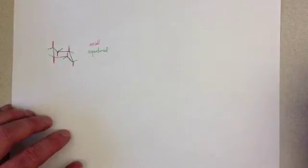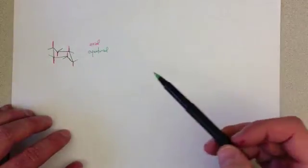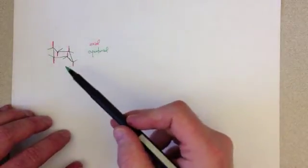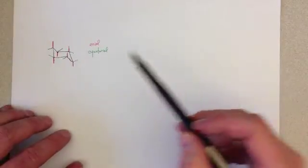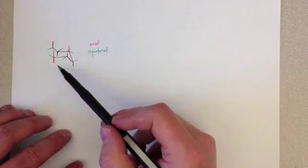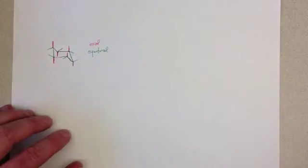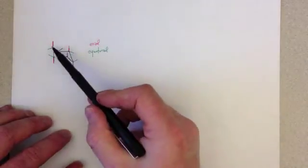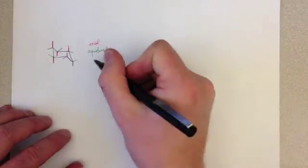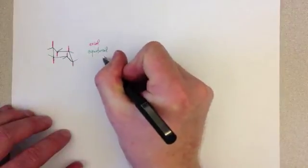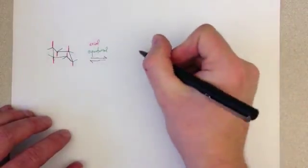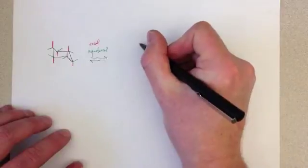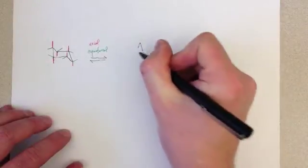Now, what I also need to demonstrate is that this chair can flip. I just chose, when I drew the cyclohexane here, to have the head of the chair on the left side. But this ring can easily flip to a different conformation where the head is on the right side.